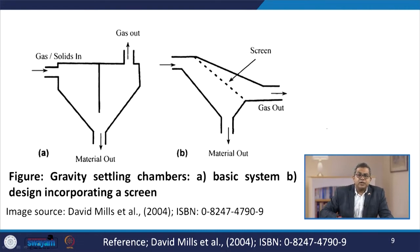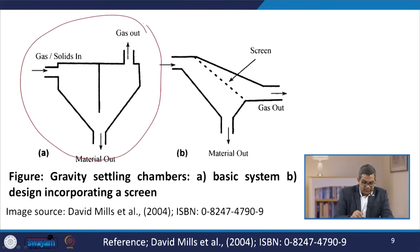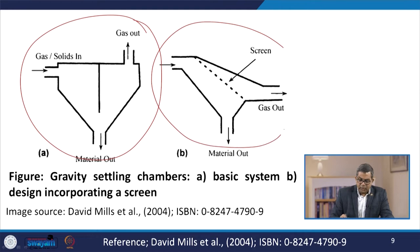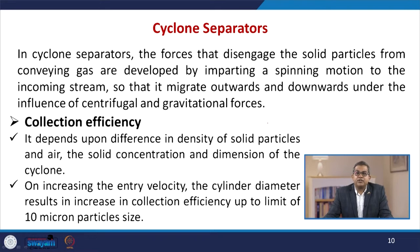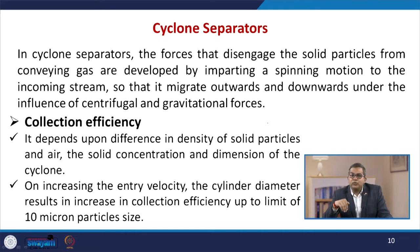The gravity settling chamber is the basic system, and you can see the screen or fabric material or separating media through which you can separate things out. Apart from this, there are various other devices, and one of the foremost in this category is the cyclone separator. In cyclone separators, the forces that disengage the solid particles from the conveying gas are developed by imparting a spinning motion to the incoming stream so that it migrates outward and downward under the influence of centrifugal as well as gravitational force.